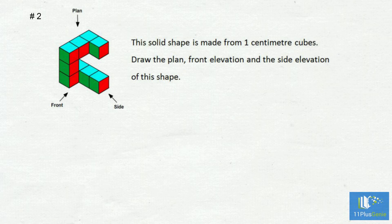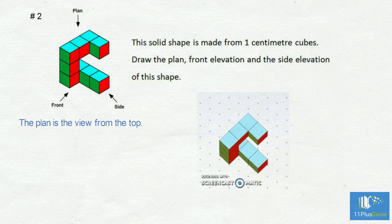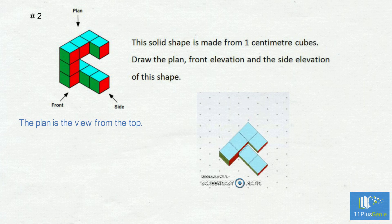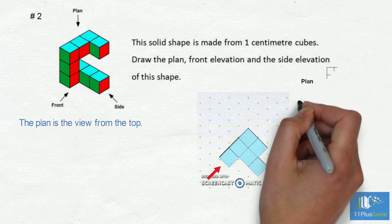Example two: draw the plan and elevations of the following 3D shape. The plan has, from left to right, three then two then one block. The plan looks like this.